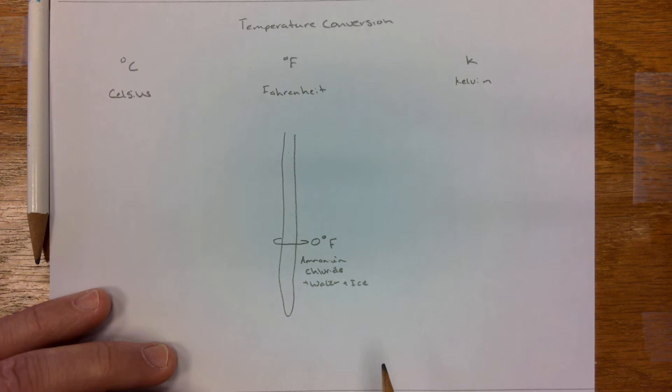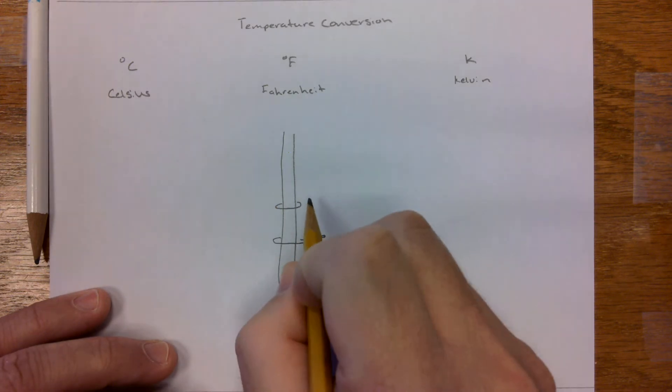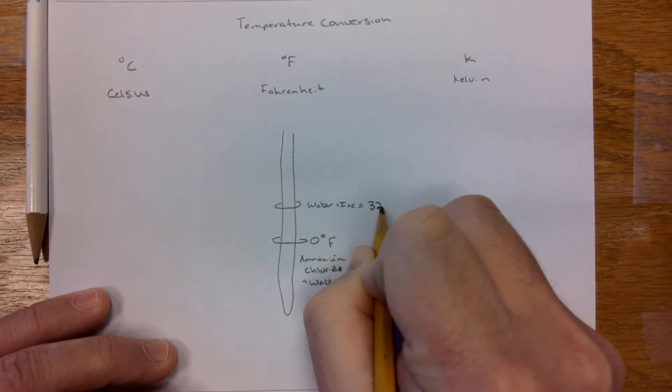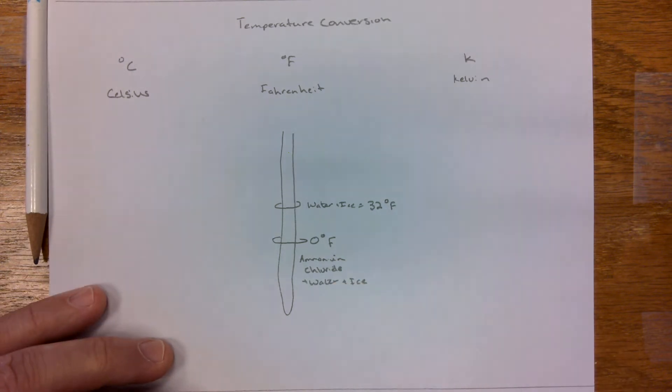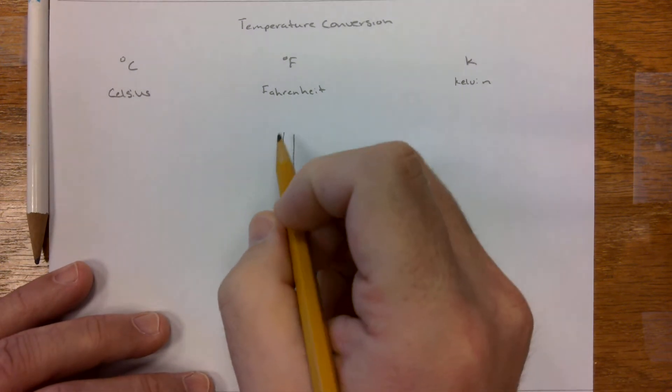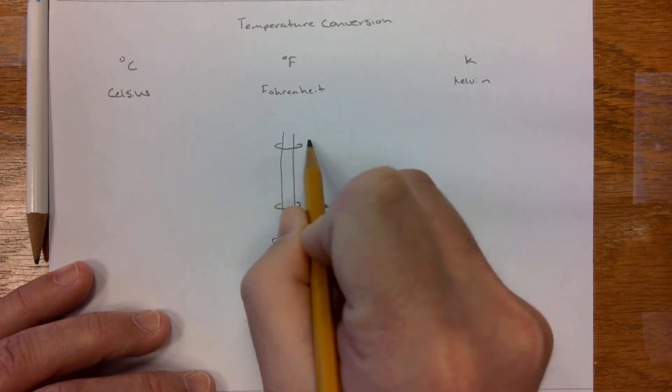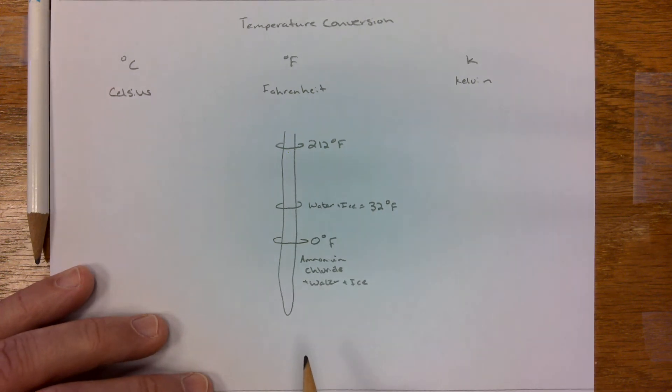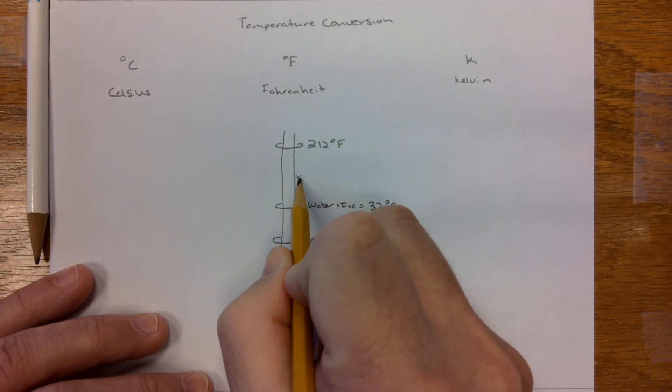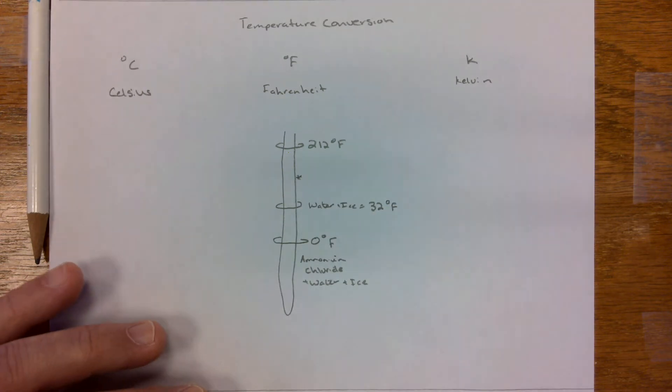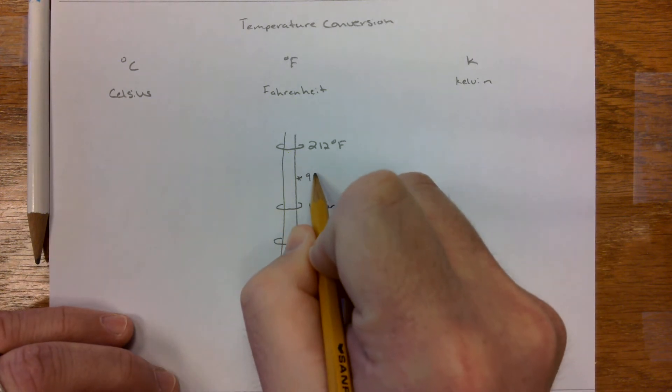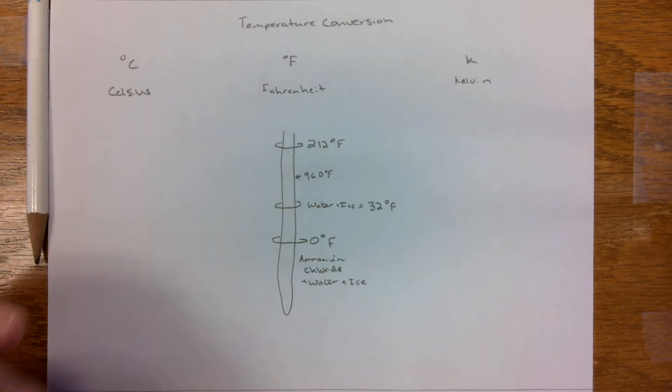He then put it in just water and ice and found out that that freezing point there with just water and ice is at 32 degrees Fahrenheit. The last one, he put it in boiling water, and we found out later on that that was at 212 Fahrenheit. There was one other one that he put in here. What he did was he took his wife's temperature under her armpit and found out that it was 96 degrees, which is fine. No worries.